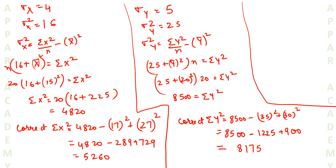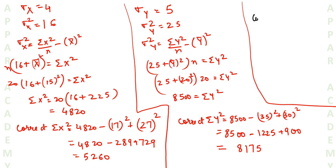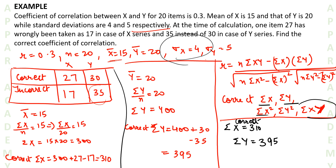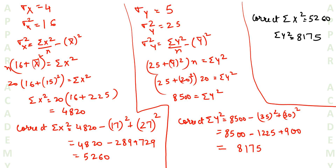We now have correct Σx² equal to 5260 and correct Σy² equal to 8175. Next we need correct Σxy. We can get Σxy using the correlation formula.